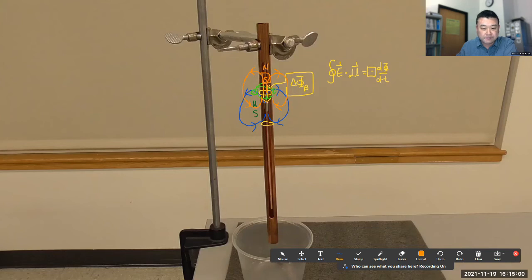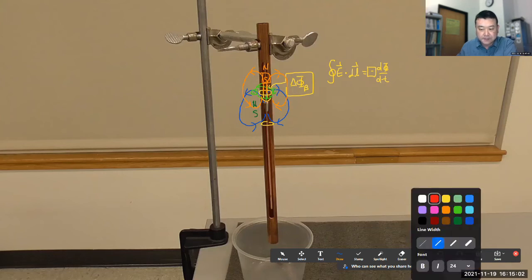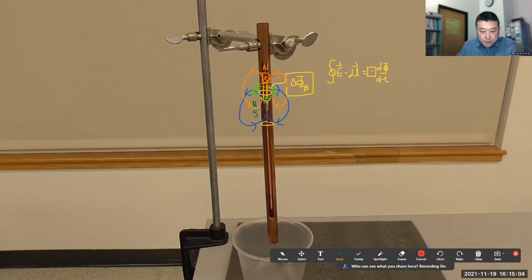And in mechanical terms, this is what's happening. This south pole end is attracting this north pole end, slowing down the falling magnet.